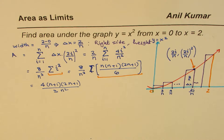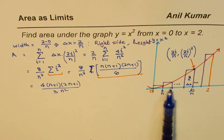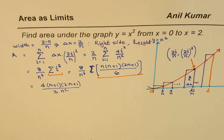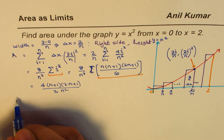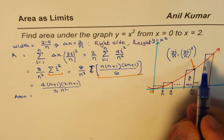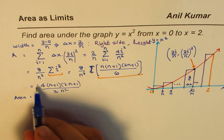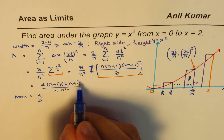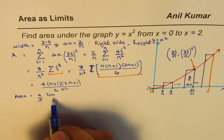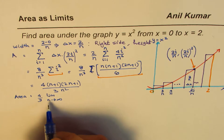Since we need the actual area under the curve — just as the slope of the secant line approached the tangent as the distance between points decreased — here the width decreases as n becomes very large. So the actual area equals (4/3) × lim(n→∞) of (n+1)(2n+1)/n².